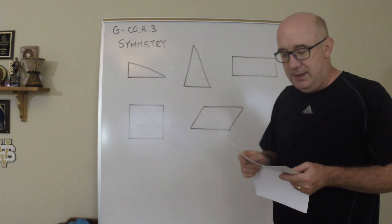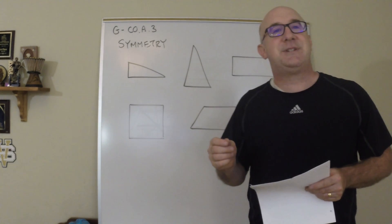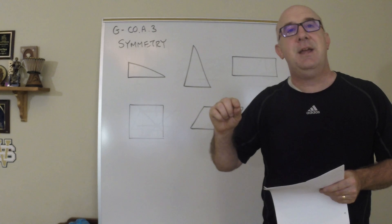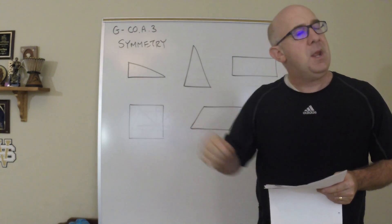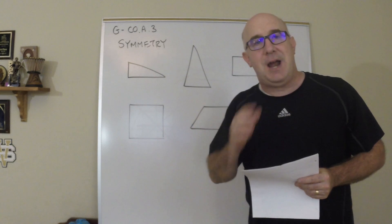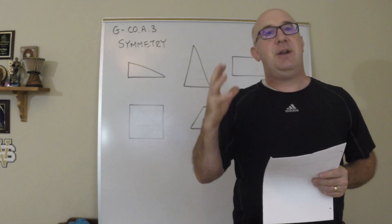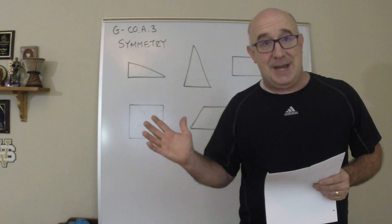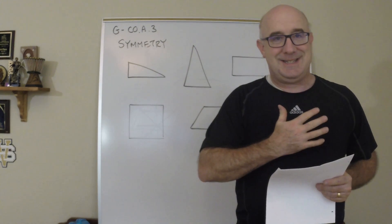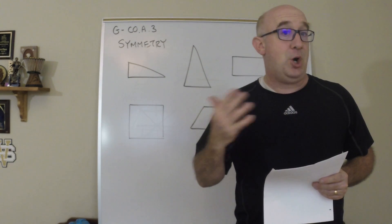First of all, the objective describes symmetry as carrying it onto itself. Interesting way of describing it. So the idea is, is there a motion that would carry part of the shape onto itself, or all of the shape onto itself.